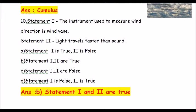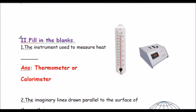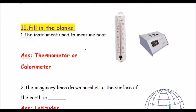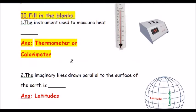Moving to Roman number two: Fill in the blanks. Question one: The instrument used to measure heat is a thermometer. There is also another instrument called a calorimeter, used to measure the temperature of a body. The answer is calorimeter.